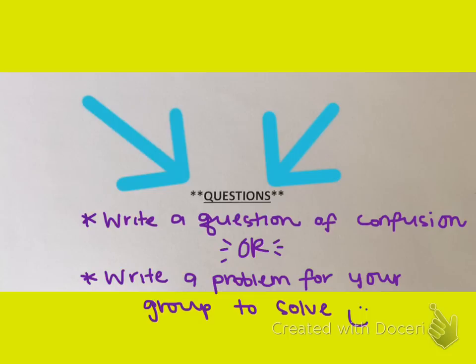This brings us to the last little section of your notes which is a little thing that says questions. And you can do one of two things here. Let's say that you did not understand something in the lesson. This is where you're going to write a question of confusion which would be how do I do and then whatever it is you don't understand. Or you can say I don't understand this part. So you can write a question of confusion if there's something you don't understand.